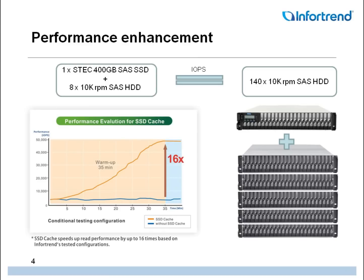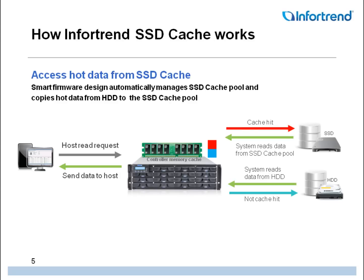InfoTran testing shows that with just one 400GB SSD alongside 8 10k RPM SAS hard drives, IOPS goes from around 3000 to a massive 48000 — a 16-fold increase. To get that kind of performance without SSD cache, we'd have to use an incredible 140 10k RPM SAS hard drives in total, which of course would be prohibitively expensive. SSD cache therefore unlocks a very cost-effective and immediately noticeable performance boost.